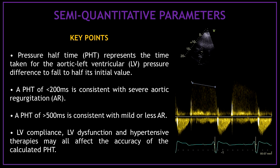What are the key points when using pressure half time to assess aortic regurgitation? Pressure half time represents the time taken for the aortic-left ventricular pressure difference to fall to half its initial value. A pressure half time of less than 200 milliseconds is consistent with severe aortic regurgitation, and more than 500 milliseconds is consistent with mild or less aortic regurgitation. Left ventricular compliance, left ventricular dysfunction, and hypertensive therapies may all affect the accuracy of the calculated pressure half time.